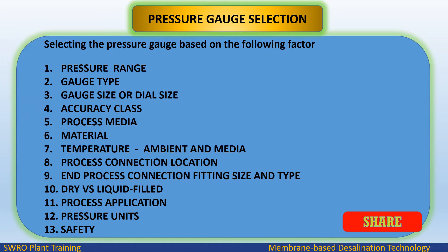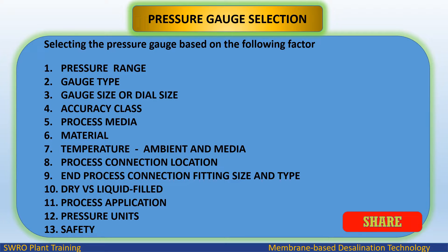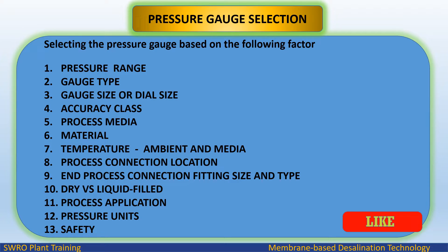Selecting the pressure gauge is based on the following factors: pressure range, gauge type, gauge size or dial size, accuracy class, process media, material, temperature (ambient and media), process connection location, process connection fitting size and type, dry versus liquid filled, process application, pressure units, and safety.